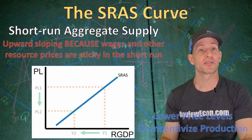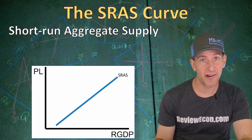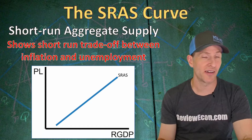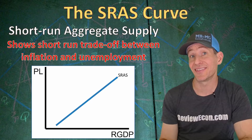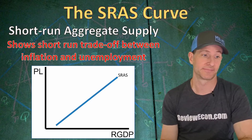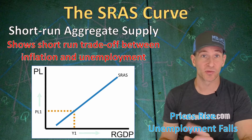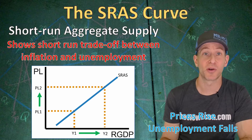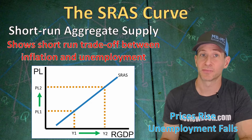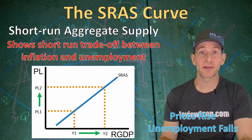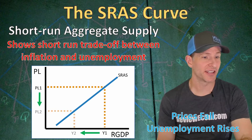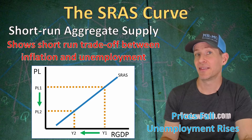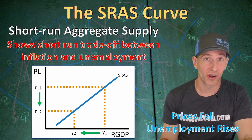As a result of that upward sloping short run aggregate supply curve, we get a short run trade-off between the unemployment rate and the inflation rate. When prices rise, real GDP output increases, and that means lower levels of unemployment. And when price levels fall, that means lower inflation, and it means lower amounts of real GDP output, and that means more unemployment.